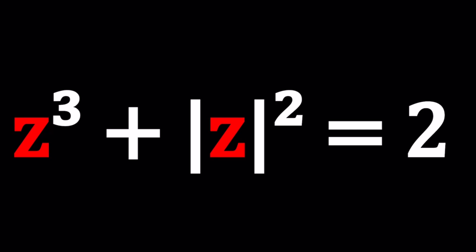Alright, so we have z cubed plus the absolute value of z squared equals 2 and we're going to be solving for the red z, right? How do we solve for it? Well, if you take a look at this equation, this kind of looks cubic so it should probably have three solutions, right? Is it fair to assume?